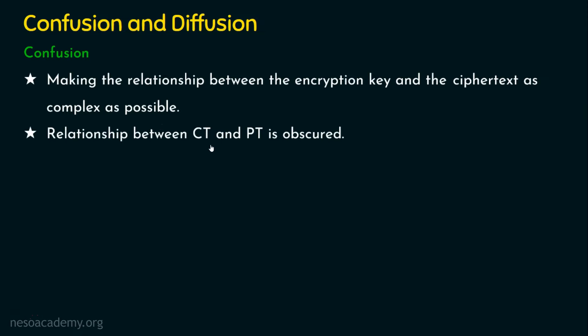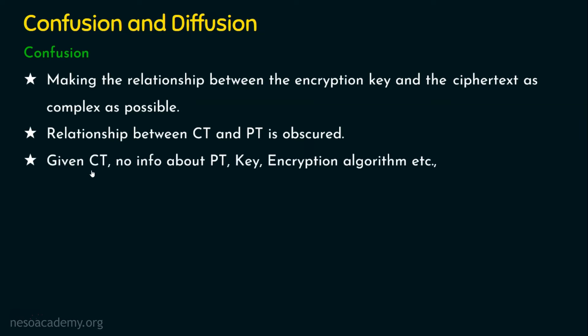The relationship between the ciphertext and the plaintext is obscured. If that relationship is hidden, even if you are given with the ciphertext, you cannot guess what the plaintext is. If we are given the ciphertext, there will be no information that can be guessed about the plaintext, the key, or what encryption algorithm the sender used to generate the ciphertext. If all details are hidden, then we can say there exists the confusion property. The substitution technique from classical encryption is an example of confusion.